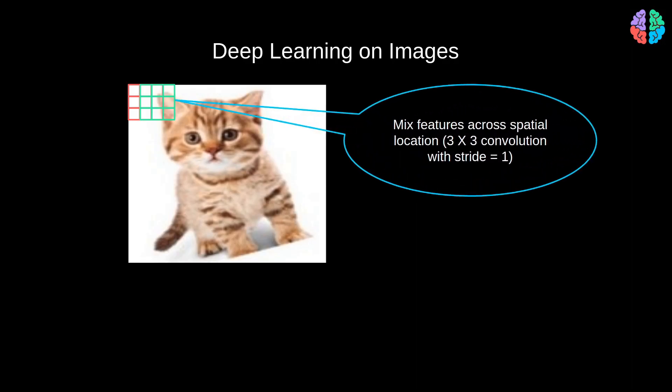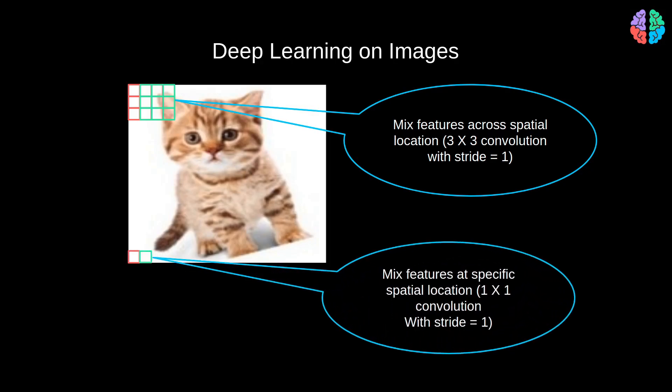Secondly, if we take a 1x1 convolution operation with a stride of 1, what it does is extract features at non-overlapping spatial locations, thus extracting features specific to a given spatial location.